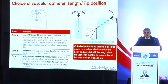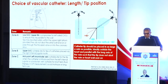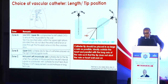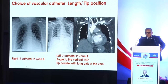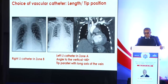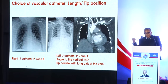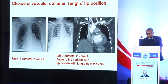Zone B describes the upper part of the superior vena cava and is suitable for right-sided IJ catheters. Zone C should be avoided for dialysis catheters, especially left-sided catheters, as the catheter-to-vein angle would be greater than 40 degrees, increasing the risk of perforation. A clinical example is shown: the right-sided IJ catheter lies in zone B, and the left-sided IJ catheter lies in zone A. As evident on the accompanying CT, the left-sided catheter lies parallel to the SVC wall, minimizing the risk of trauma.